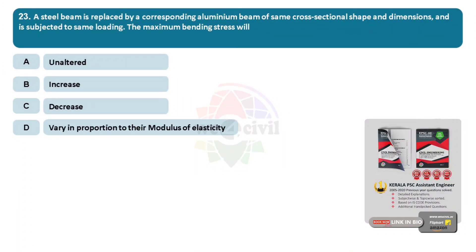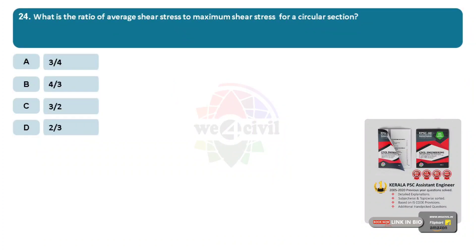Question 23: A steel beam is replaced by a corresponding aluminum beam of same cross-sectional shape and dimensions and is subjected to same loading. The maximum bending stress will? Options: A, unaltered. B, increase. C, decrease. D, vary in proportion to the modulus of elasticity. Answer: Option A, unaltered. Question 24: What is the ratio of average shear stress to maximum shear stress for a circular section? Options: A, 3/4. B, 4/3. C, 3/2. D, 2/3. Answer: Option A, 3/4.